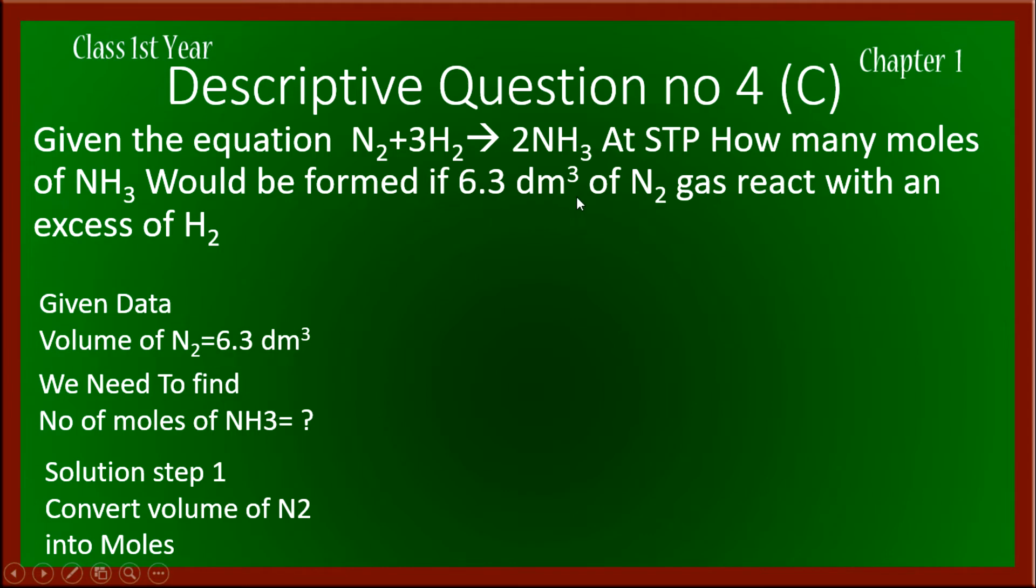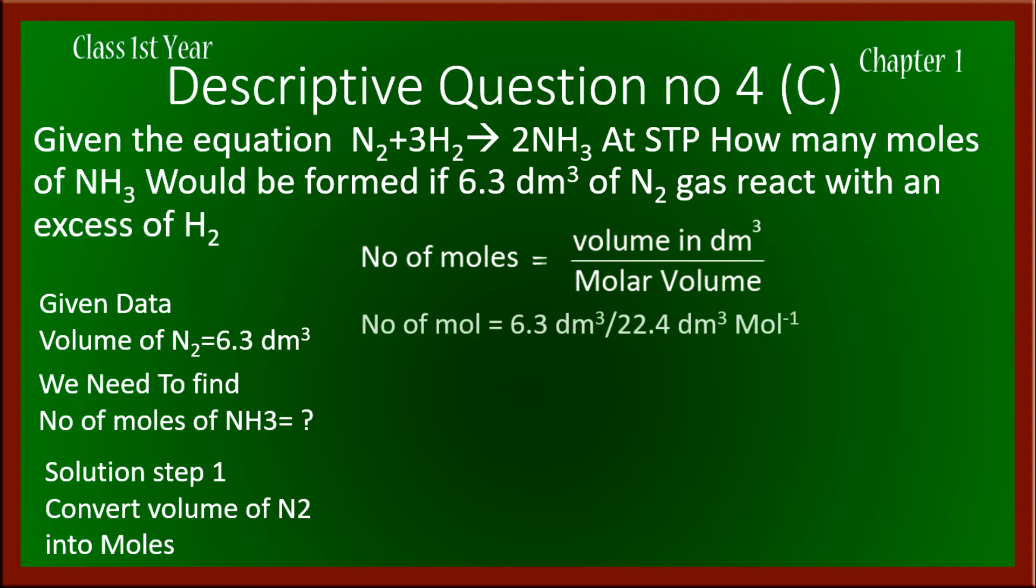Solution step 1 is to convert the volume of nitrogen into moles. The formula is: number of moles equals volume in dm³ divided by molar volume. The volume of nitrogen is 6.3 dm³, and the molar volume at STP is 22.4 dm³ per mole. After calculation, the number of moles of nitrogen is 0.281 moles.